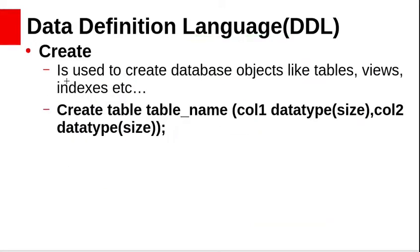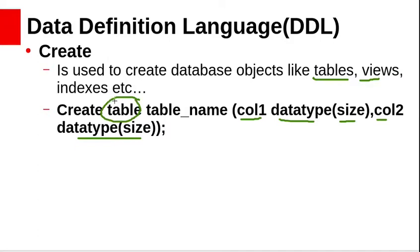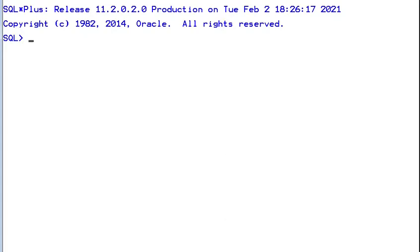The CREATE command is used to create database objects like tables, views, and indexes. The syntax is: CREATE TABLE, table name, then specify each column with its data type and size. If you have more columns, list column 2 with its data type and size, and so on. If creating a view, use CREATE VIEW with the view name and its syntax. Let us see the CREATE command in Oracle.